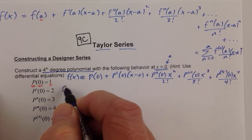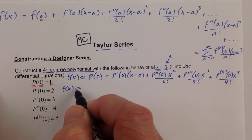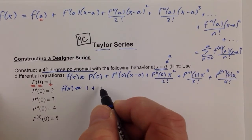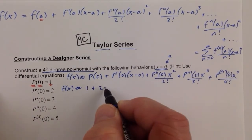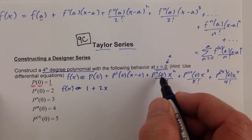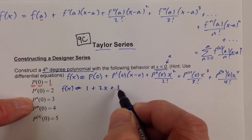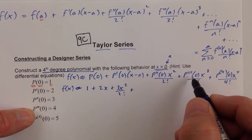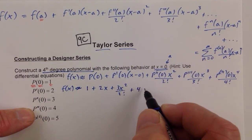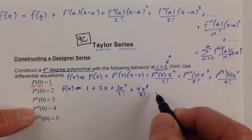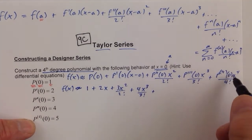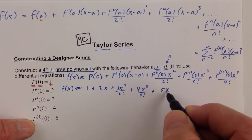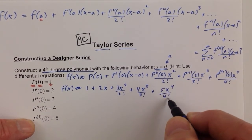So f of x is approximately equal to p of 0, which is 1, plus p prime of 0 is 2, times x. Then p double prime is 3, so plus 3x squared over 2 factorial, plus the third derivative at 0 which is 4, multiplied by x cubed over 3 factorial, plus the fourth derivative at 0 which is 5, giving us 5x to the fourth over 4 factorial.